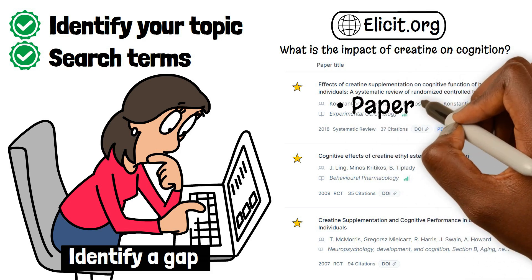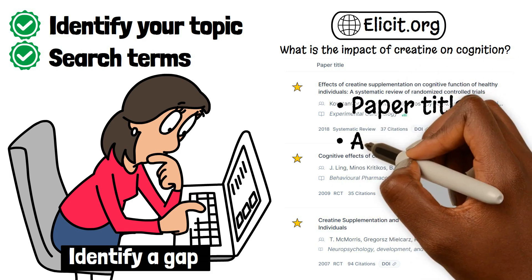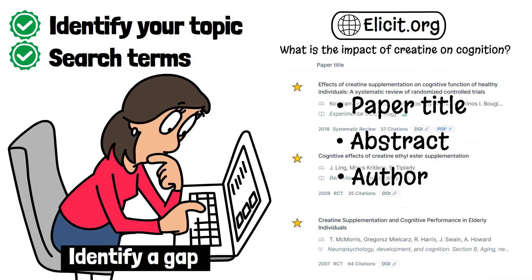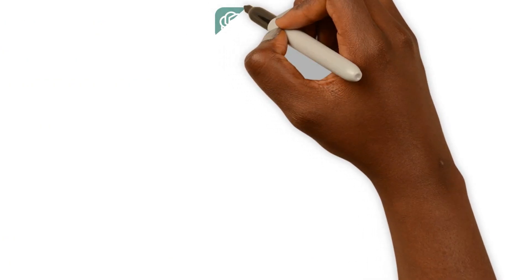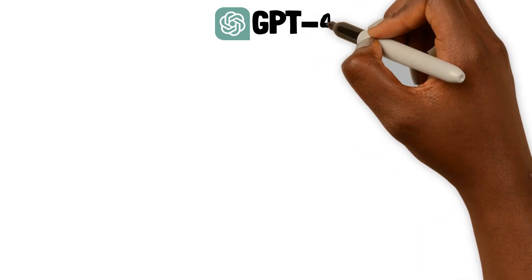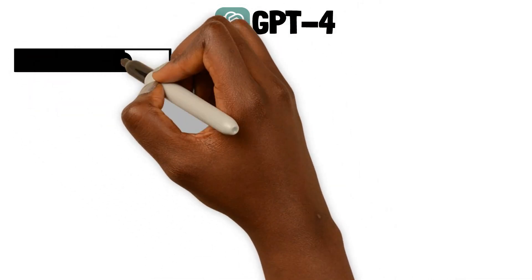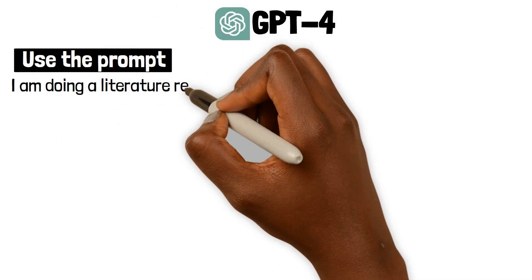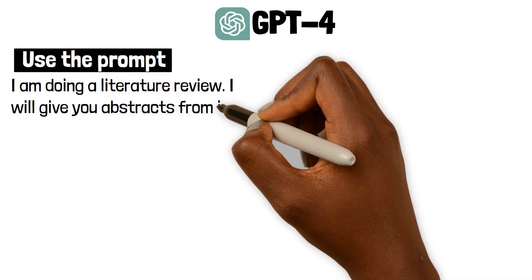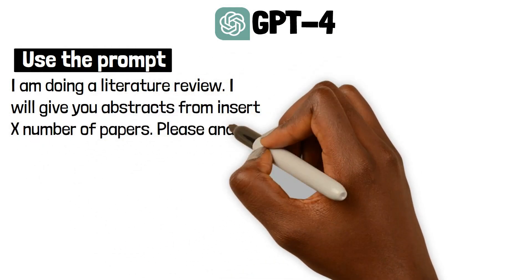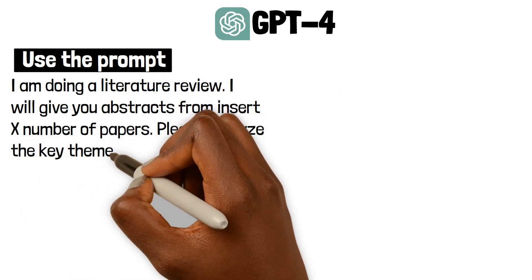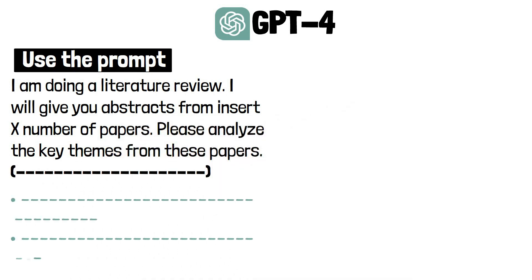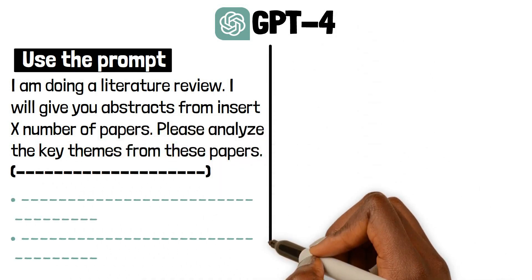Elicit will provide a range of categories including the paper title, abstract, author, and more. Now it's time to analyse key themes using GPT-4. Use the prompt: 'I'm doing a literature review. I will give you abstracts from X number of papers. Please analyse the key themes from these papers.' Add the abstracts and GPT-4 will suggest the themes.